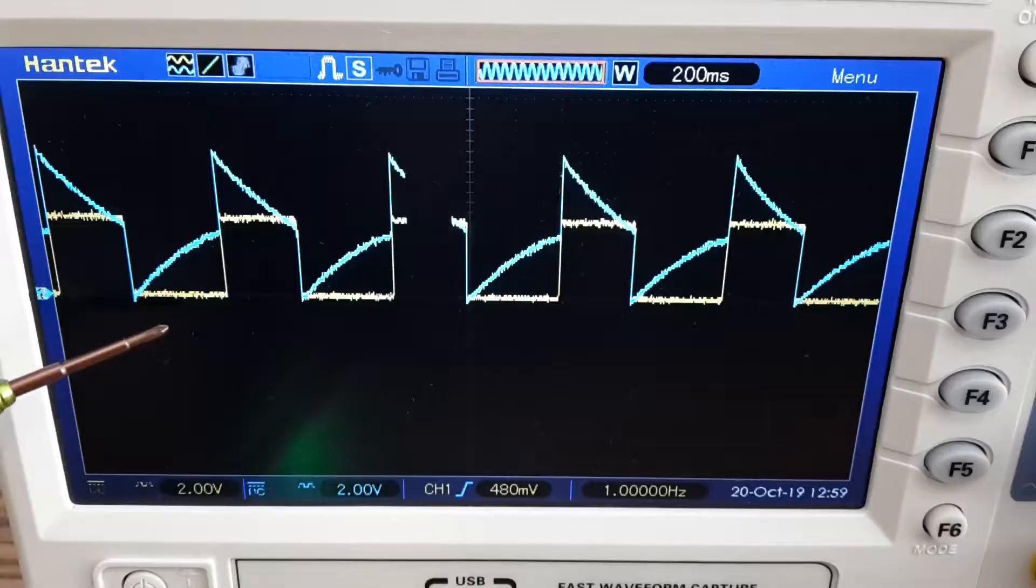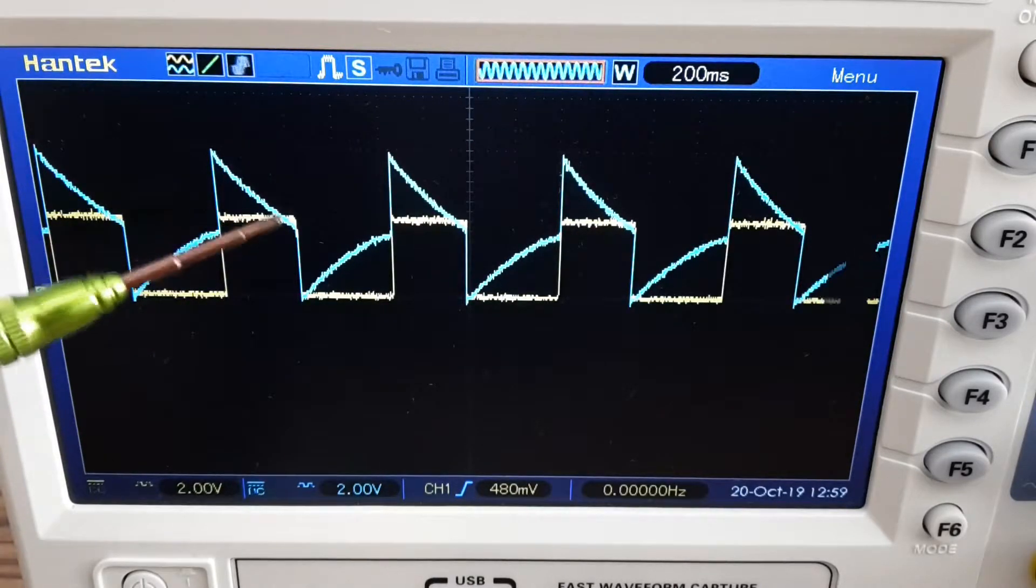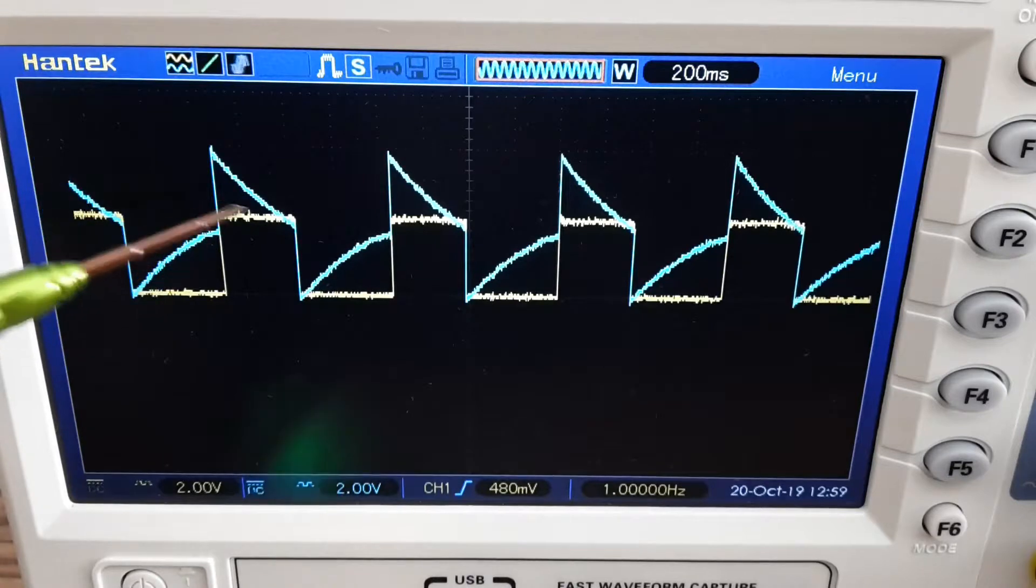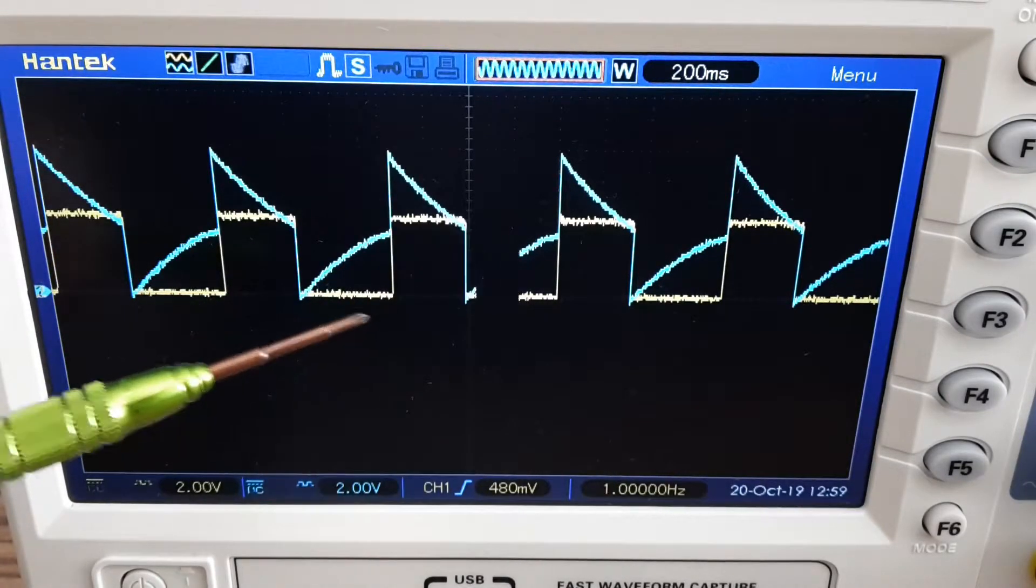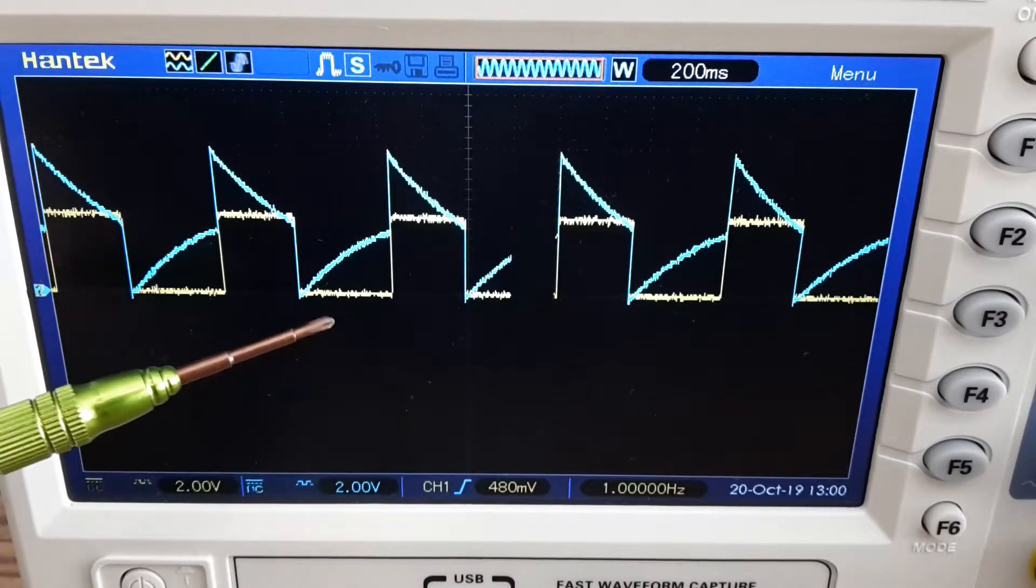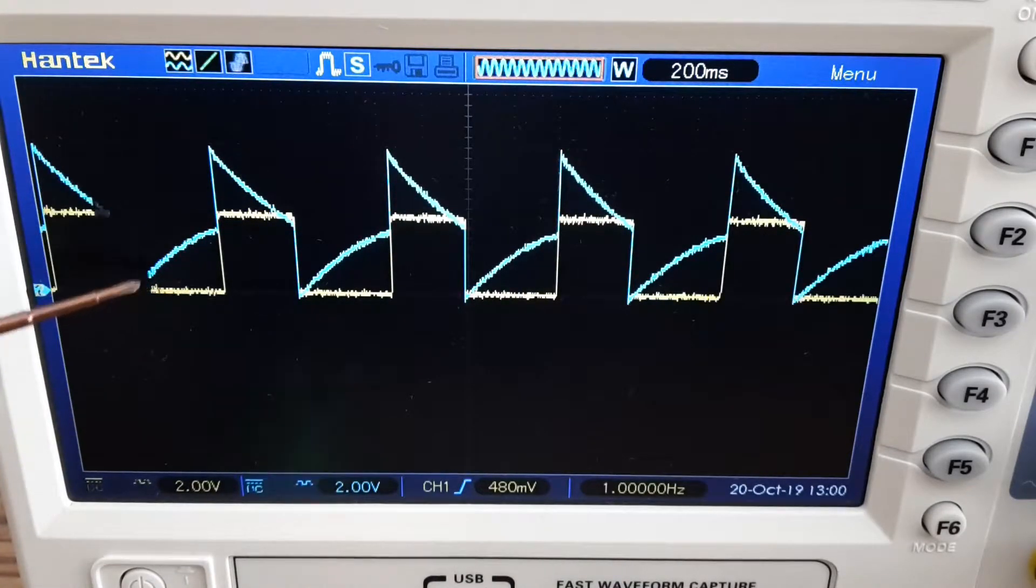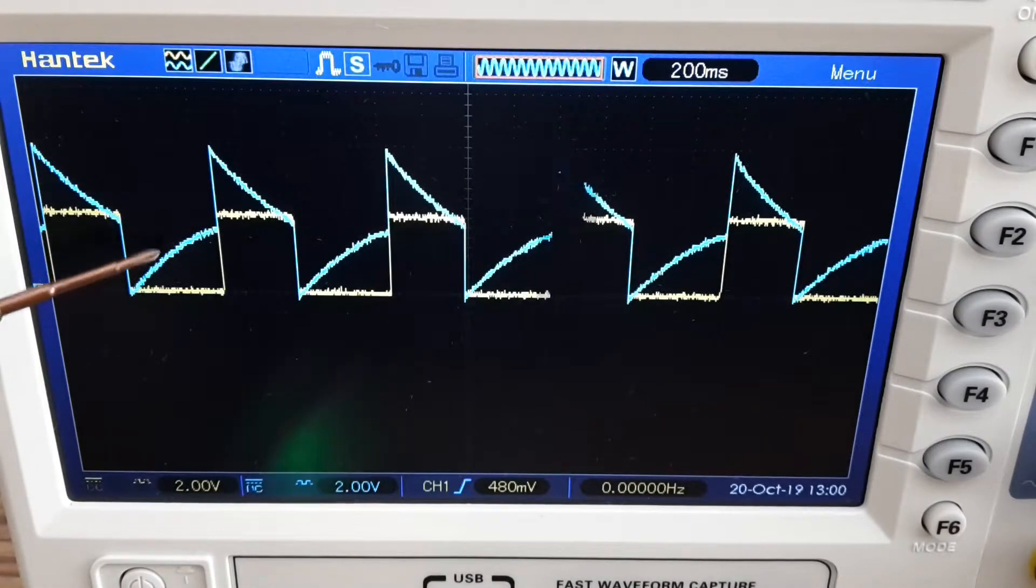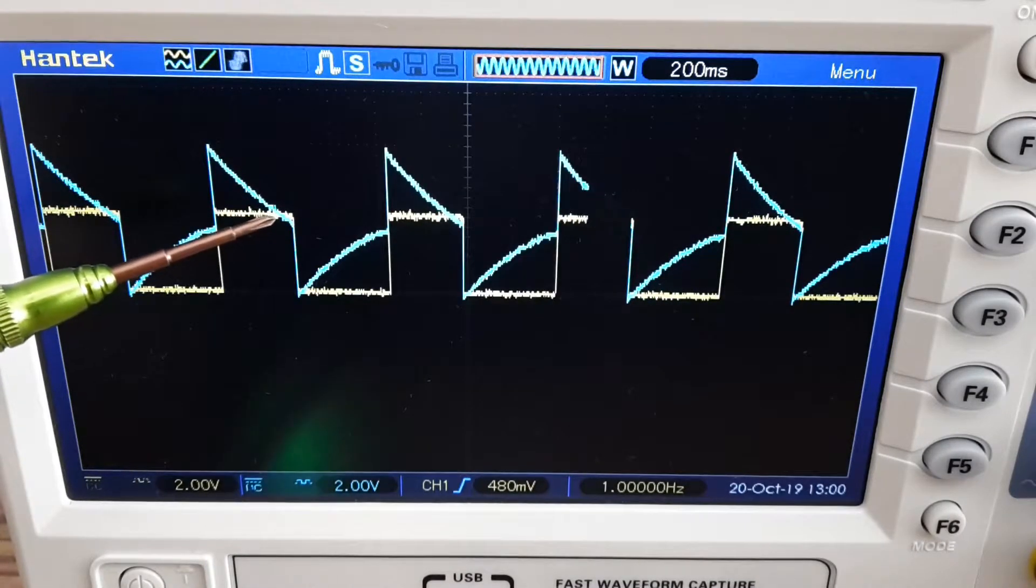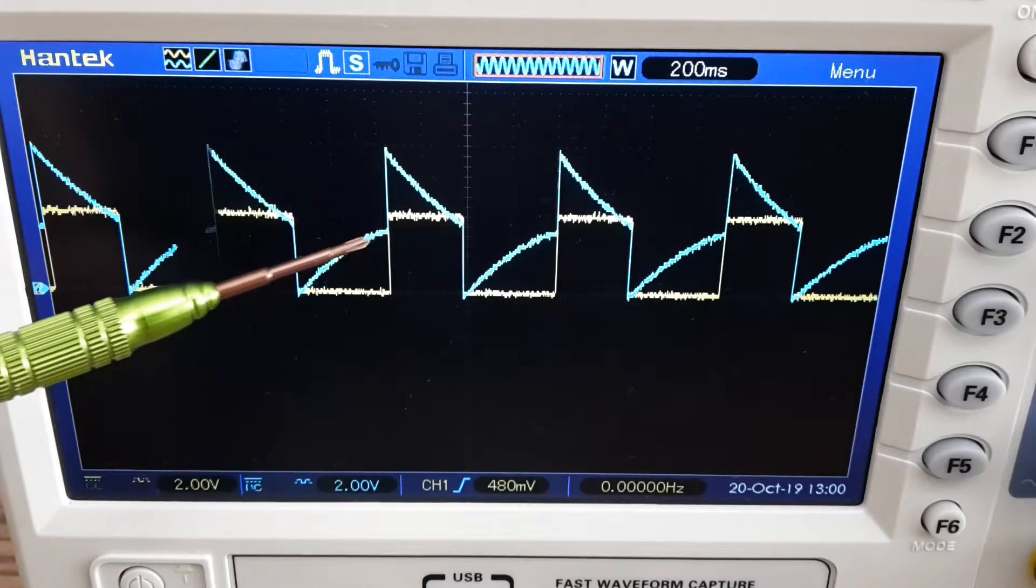When I check the clock generator on my oscilloscope you can see the yellow line which is a square signal and it's the output signal. The blue line shows how the capacitor is charging and discharging and how it changes the square signal from logical 0 to logical 1 and the other way around.